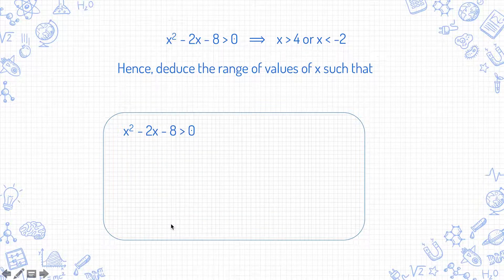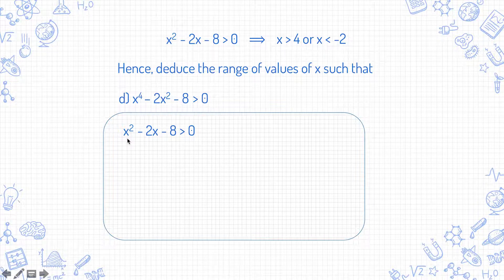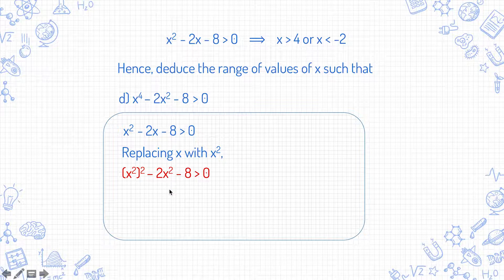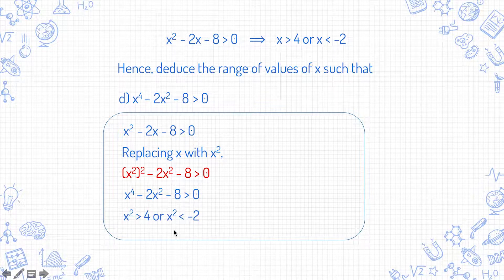Now we can move on to example d. Comparing the expressions: x corresponds to x², x² corresponds to x², and x to the power of 4. To get from the original to this new expression, you need to replace x with x². So x² becomes (x²)² and x becomes x², giving the required expression. Replacing x with x² in the solution: x²>4 or x²<-2.